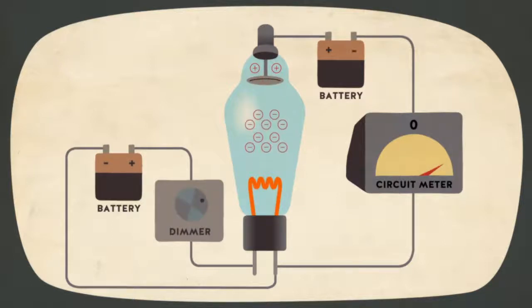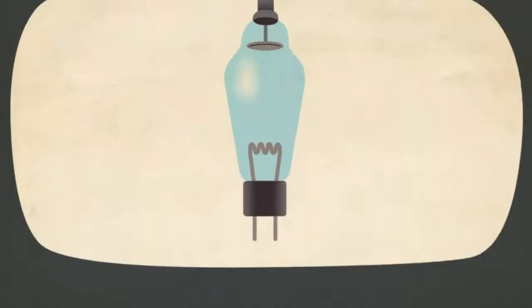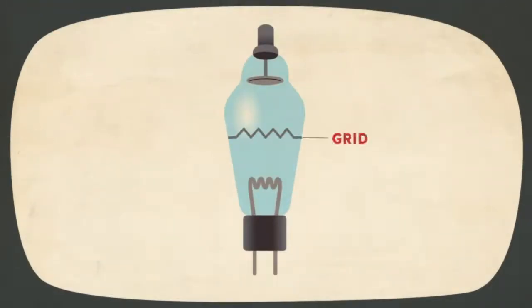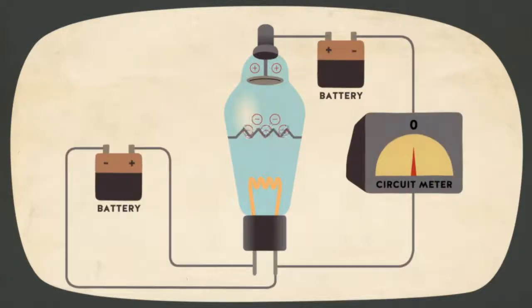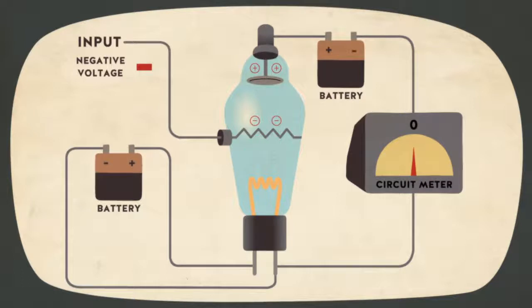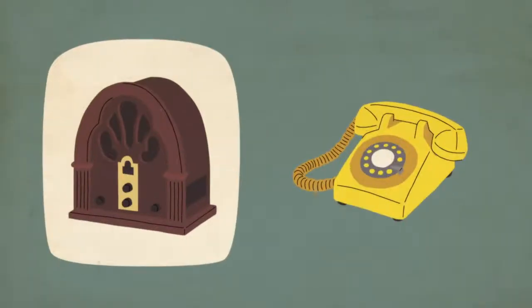The next stage was the triode, which uses a third electrode called the grid. This is a wire screen between the cathode and anode, through which electrons could pass. Varying its voltage makes it either repel or attract the electrons emitted by the cathode, thus enabling fast current switching. The ability to amplify signals also made the triode crucial for radio and long-distance communication.